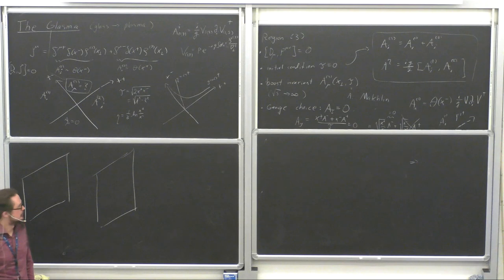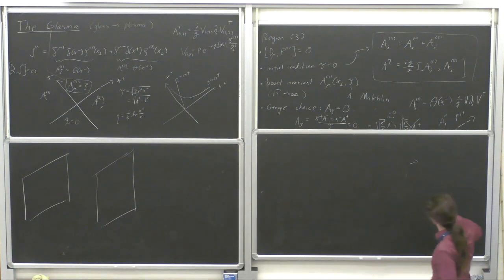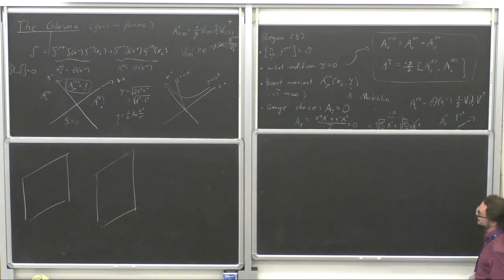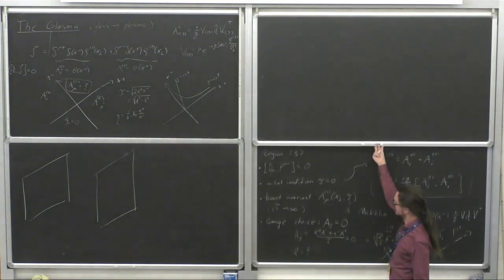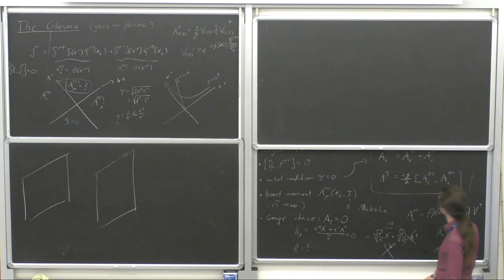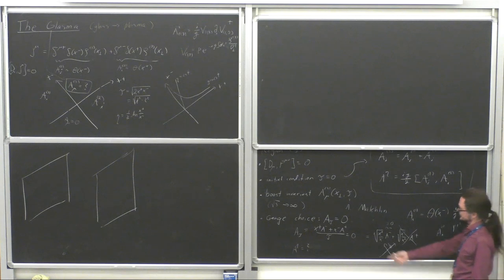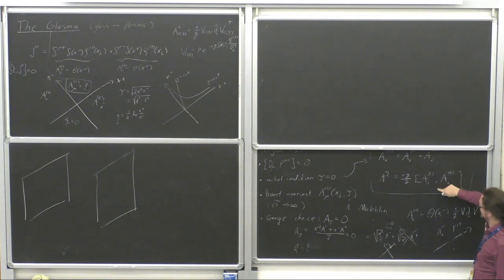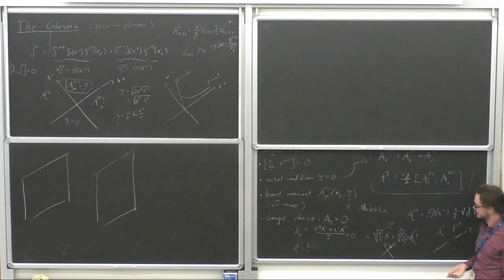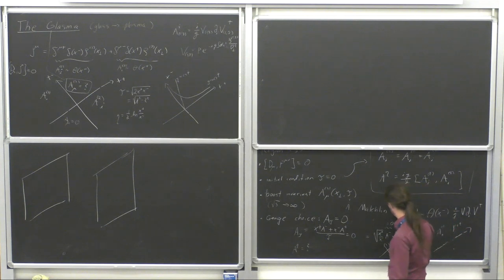Let's continue. We now found the initial conditions of our glasma fields inside the future light cone. The idea is that we just plug them into the equation of motion D_mu F^{mu nu} = 0 and solve as an initial value problem. Of course this is a second-order differential equation so to solve it forward in time we need not only the initial condition for the fields but also the initial condition for the time derivatives of the fields.